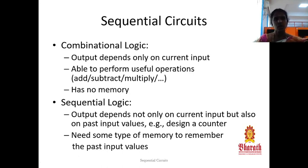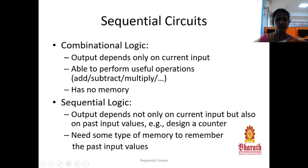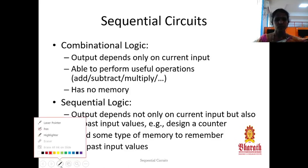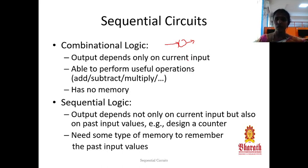All digital circuits are basically categorized into two types. One is combinational logic, another one is sequential logic. In case of combinational logic, the output of the circuit will be decided by the present input. The circuit gets input from the user, performs the operation, and produces the output. Logic gates act as the basic fundamental building block of combinational logic.